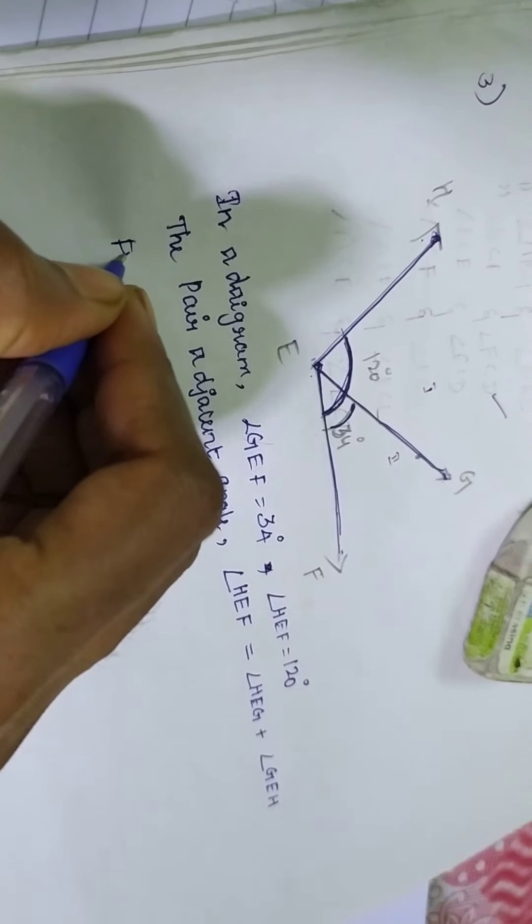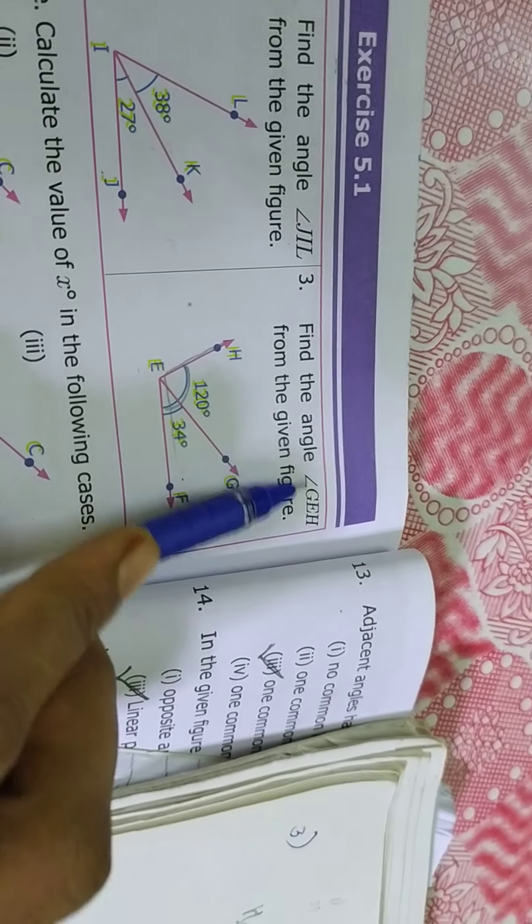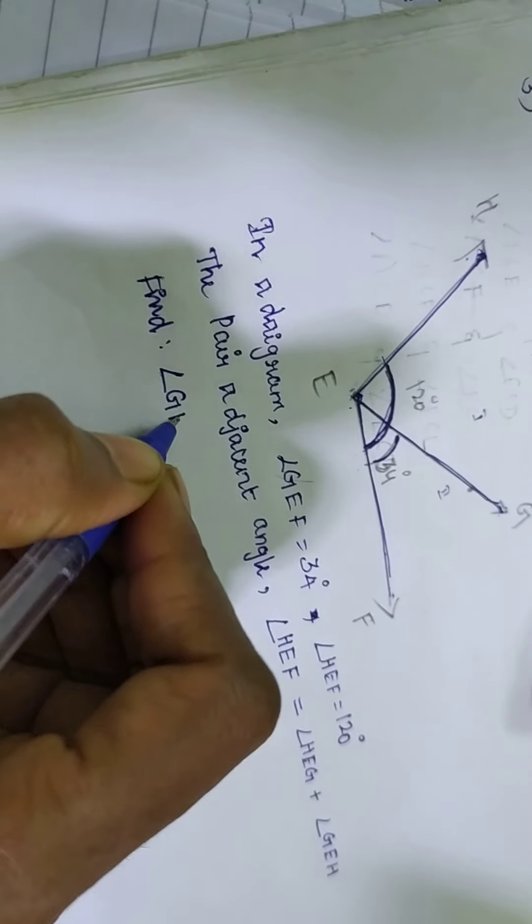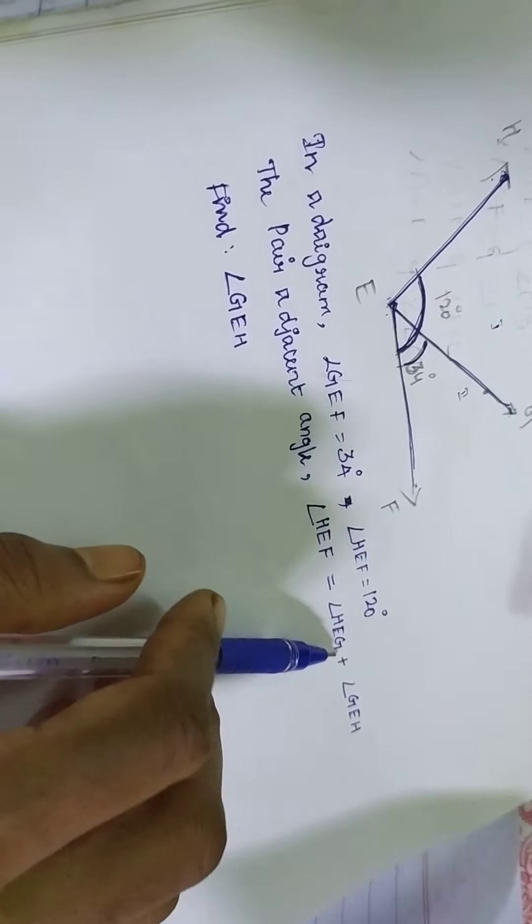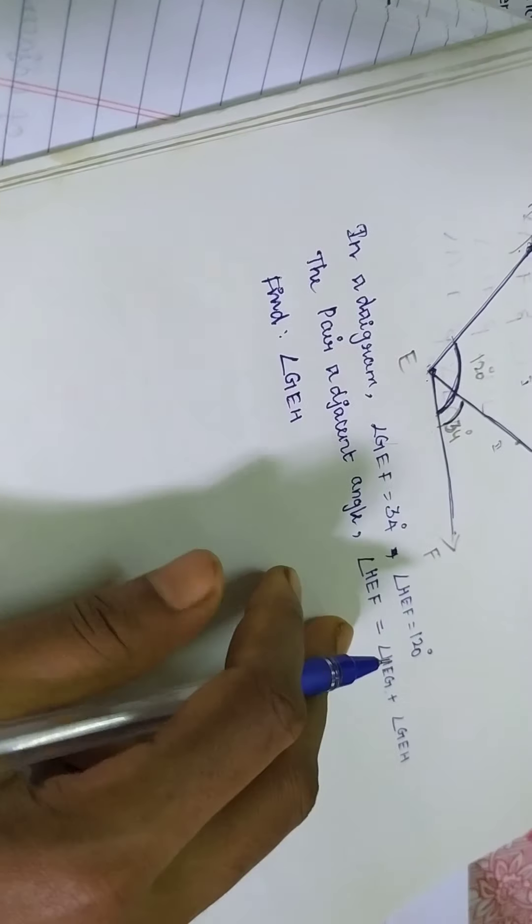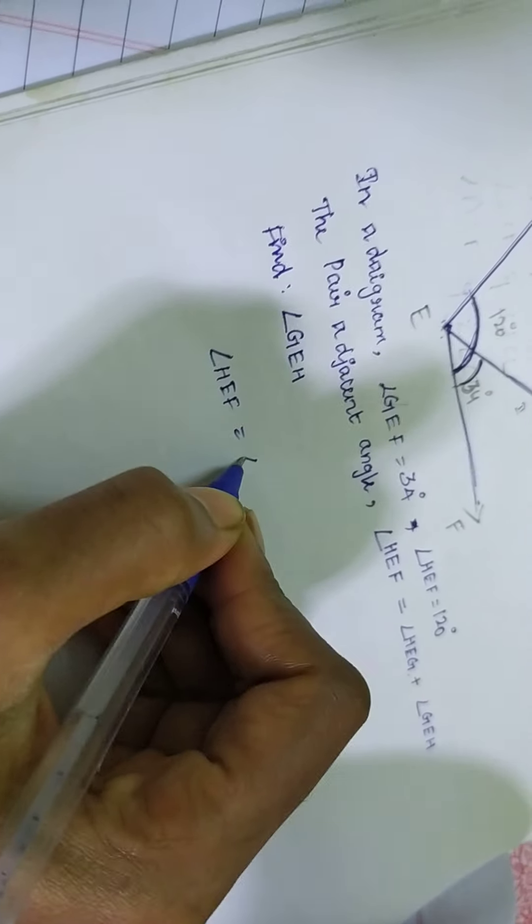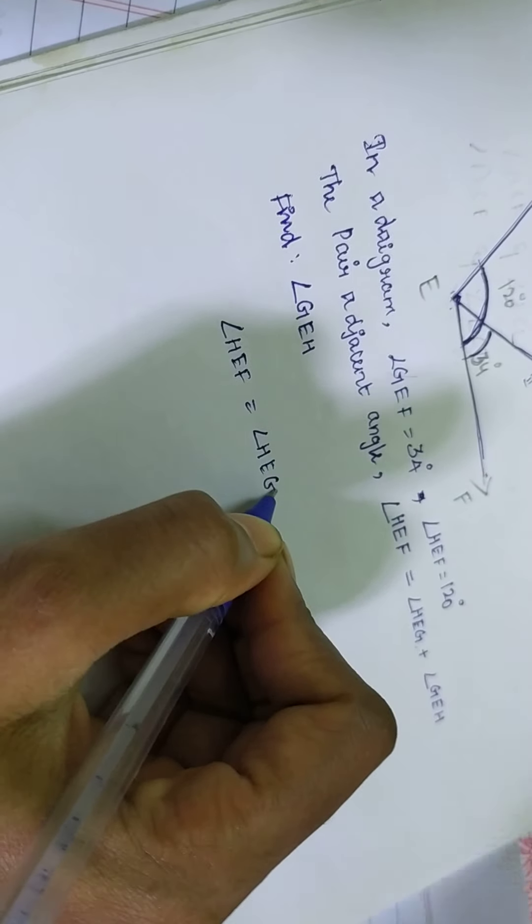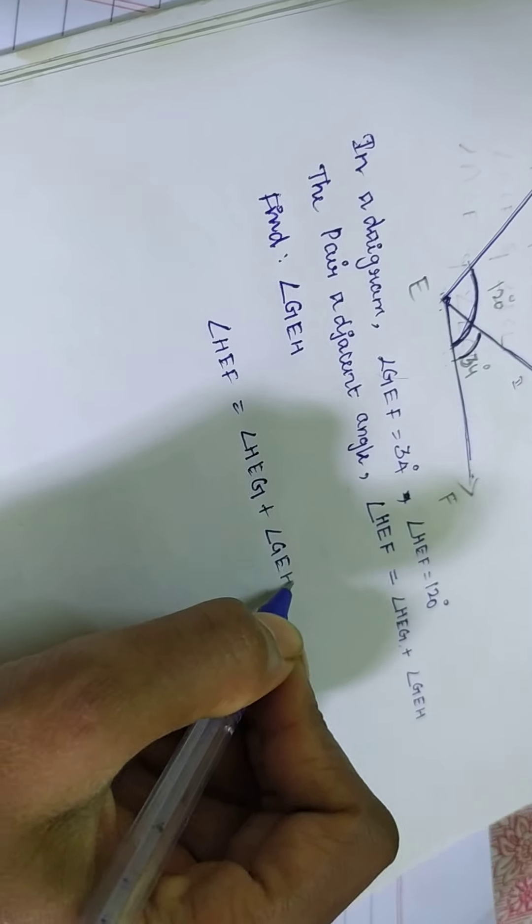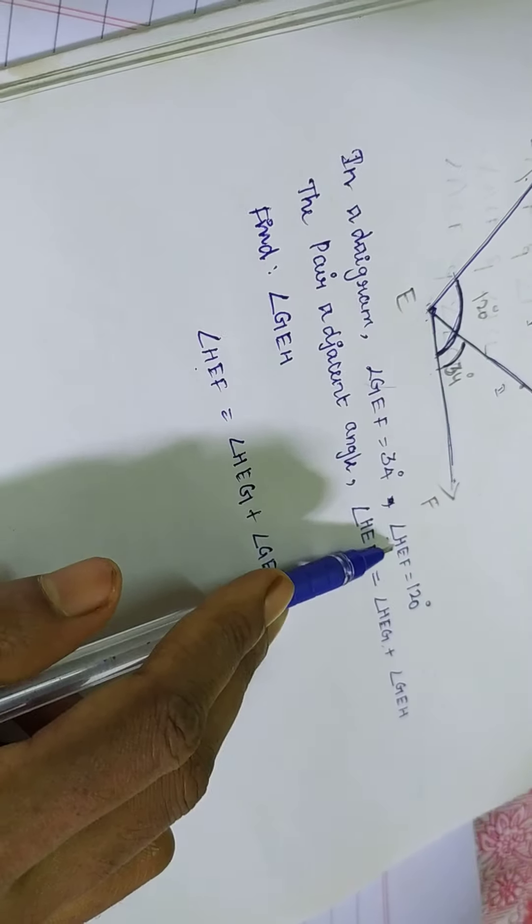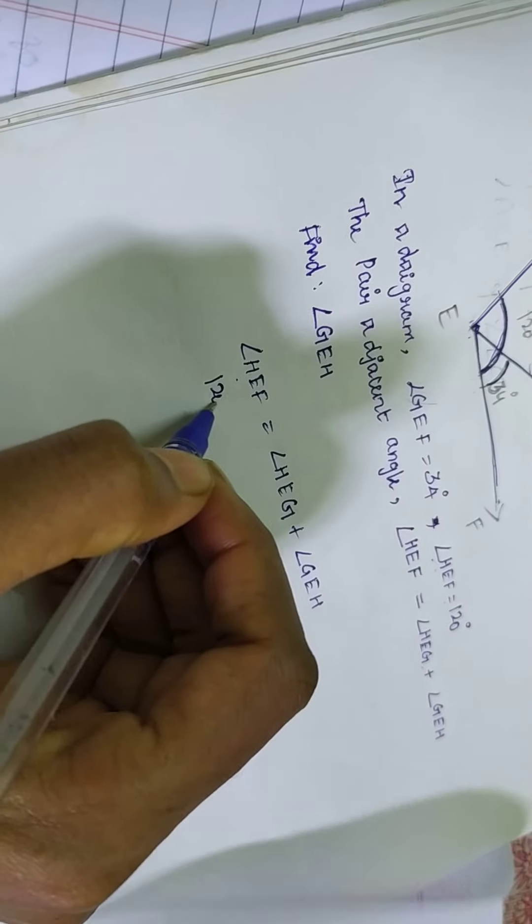So what they are asking? Find the angle G E H. So what you find angle G E H. So I can substitute my value in this place if I am getting my angles. So this is my given. H E F is equal to H E G plus angle G E H. Okay. H E F I already have. Where it is? H E F is 120 degrees.